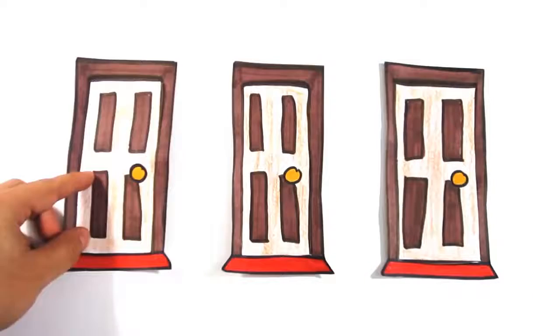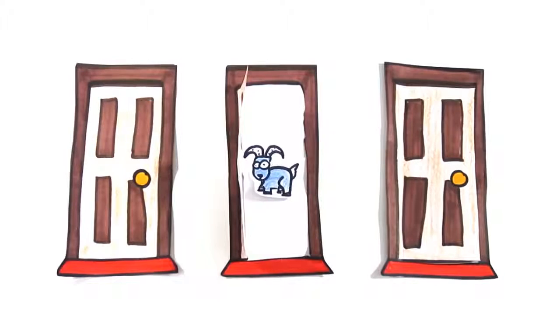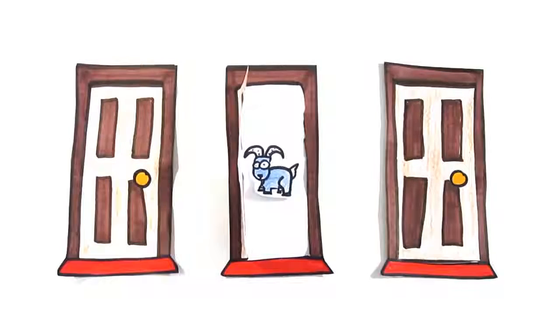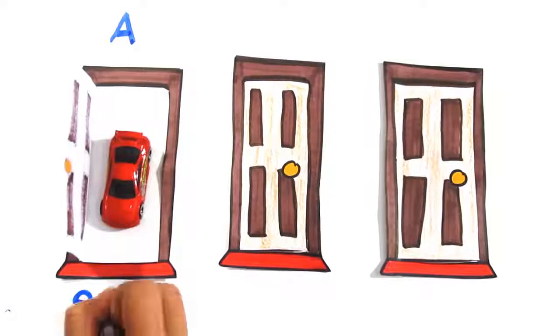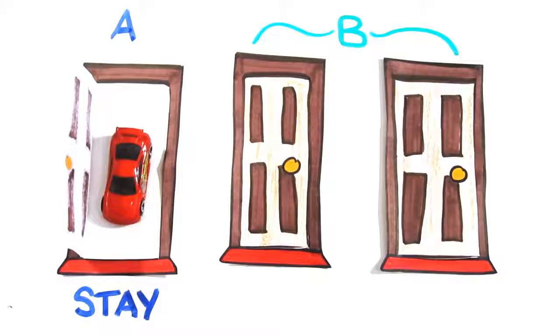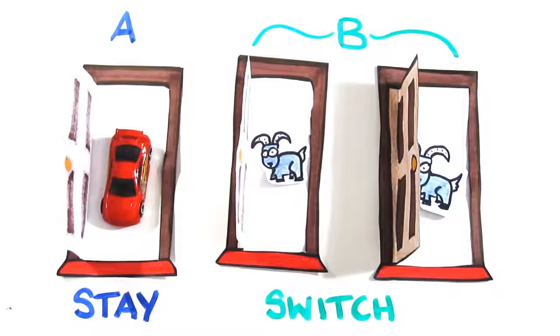The same principle is true with the three doors. You see, when I removed the door, I did so with motive, knowing there was a goat behind it. The only two scenarios that exist are A, you chose the correct door and I'm arbitrarily picking one of the wrong choices to show you, in which case staying will make you win, or B, you picked the wrong door and I show you the other incorrect answer, in which case switching will make you win.